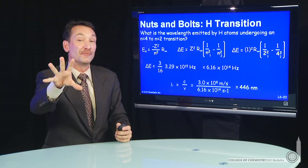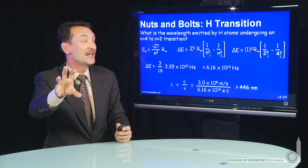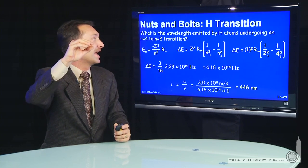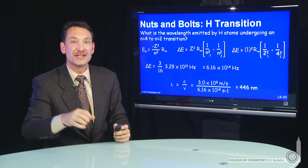So a photon of blue light will be emitted by hydrogen atoms when they undergo a transition from an n equals 4 to n equals 2 state.